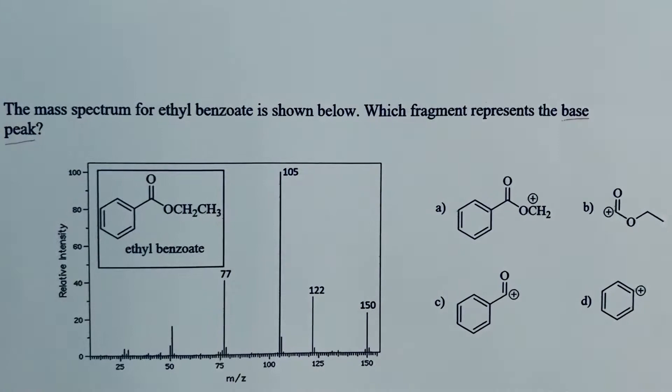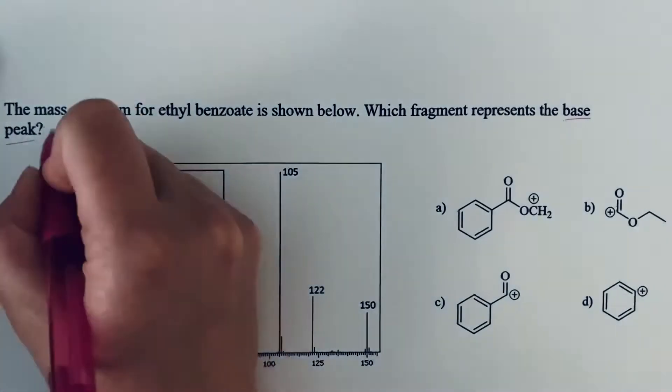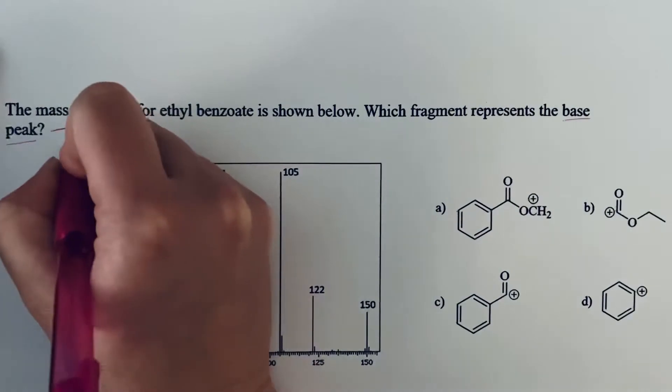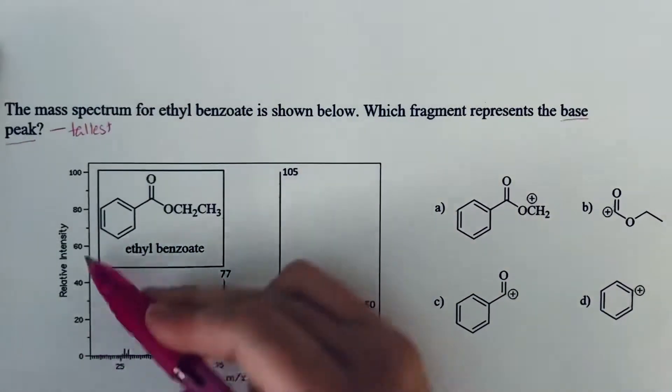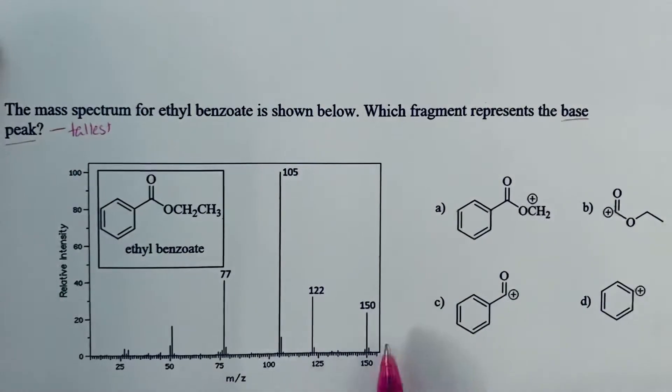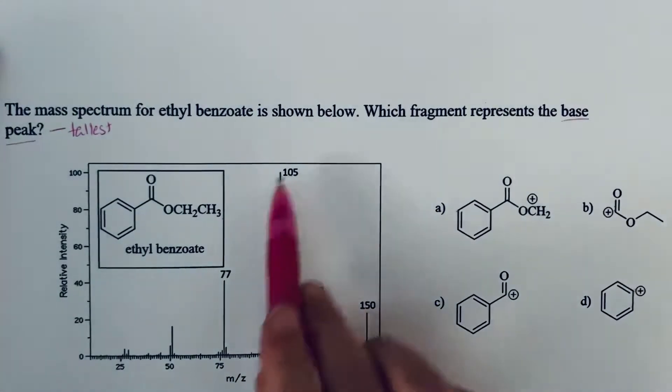We need to know what is meant by the term base peak. A base peak in the mass spectrum is the tallest peak in the spectrum in terms of height, not the largest number, but the highest peak.